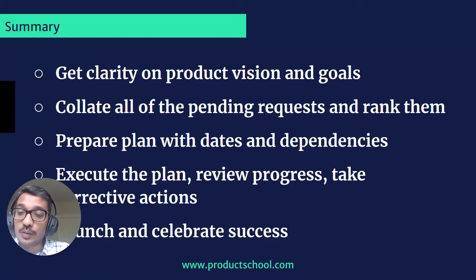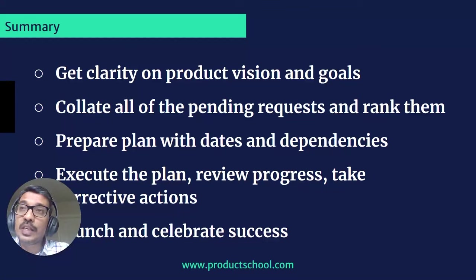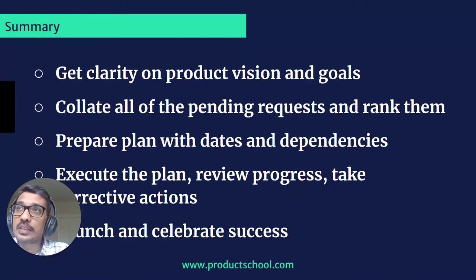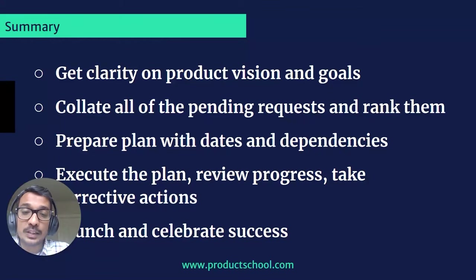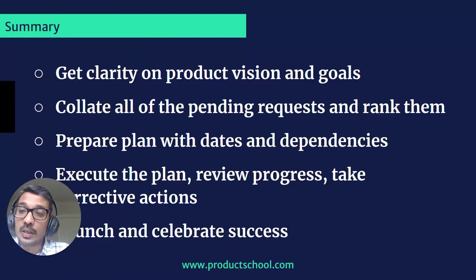To quickly summarize what we covered: The first step in building and executing a roadmap is to get clarity on the vision and goal. Then talk to multiple people — customers and stakeholders — understand the gaps, collate all requests, and stack rank them based on your vision and goal. Based on available resources, prepare a plan that clearly defines what you want to do and by when. Then start execution, review progress on an ongoing basis, take corrective actions along the way, and when you're ready for launch, go ahead and launch — and celebrate success.